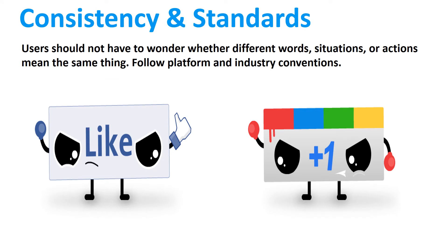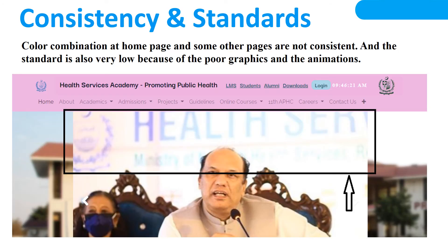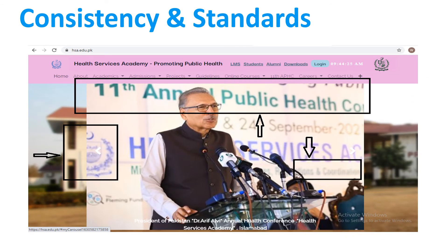Consistency and standards: users should not have to wonder whether different words, situations or actions mean the same thing — follow platform and industry conventions. As you see, the color combination on the home page and some other pages is not consistent, and the standard is also very low due to poor graphics and animation. You can see in these pictures that we cannot easily understand what is written, and consistency and standard are both lacking.